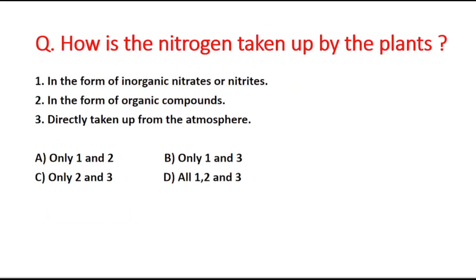Next question: how is nitrogen taken up by plants? Statement 1: in the form of inorganic nitrates or nitrites. Statement 2: in the form of organic compounds. Statement 3: directly taken up from the atmosphere. The correct answer is option A — statements 1 and 2 are correct. Nitrogen is taken up by plants in the form of inorganic nitrates or nitrites, or in the form of organic compounds.